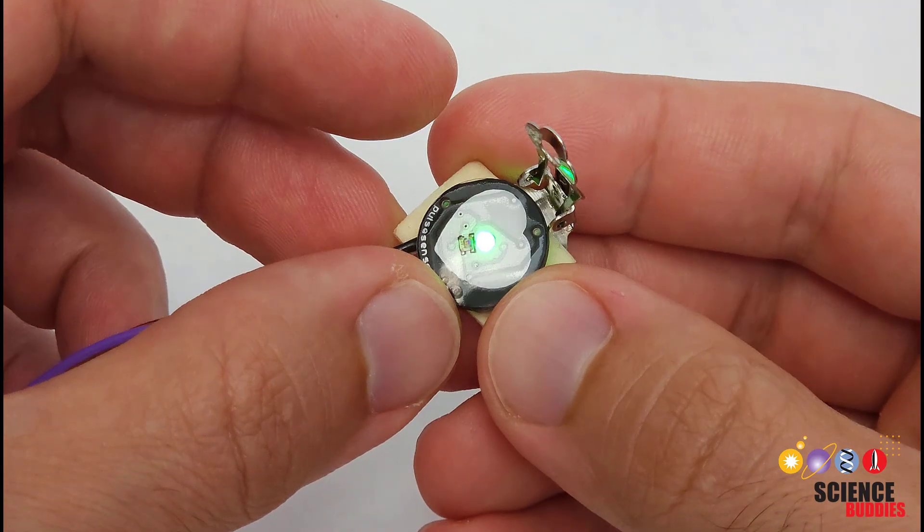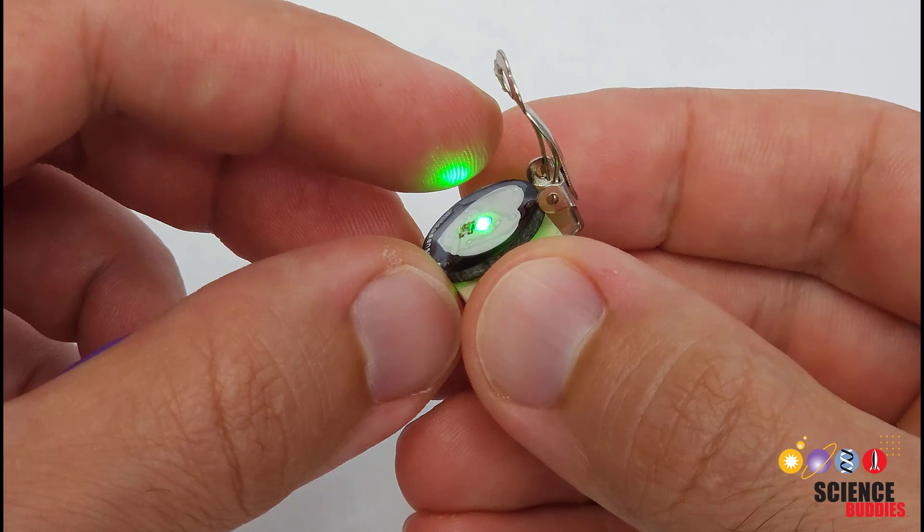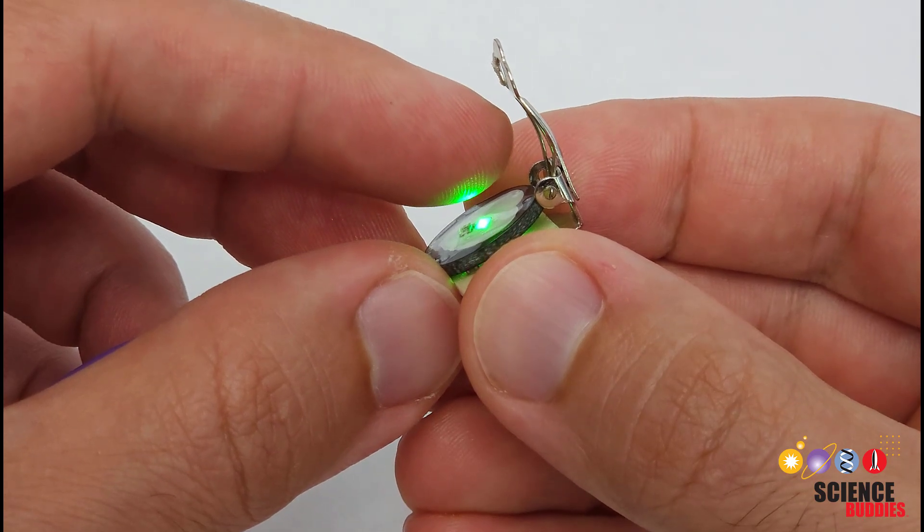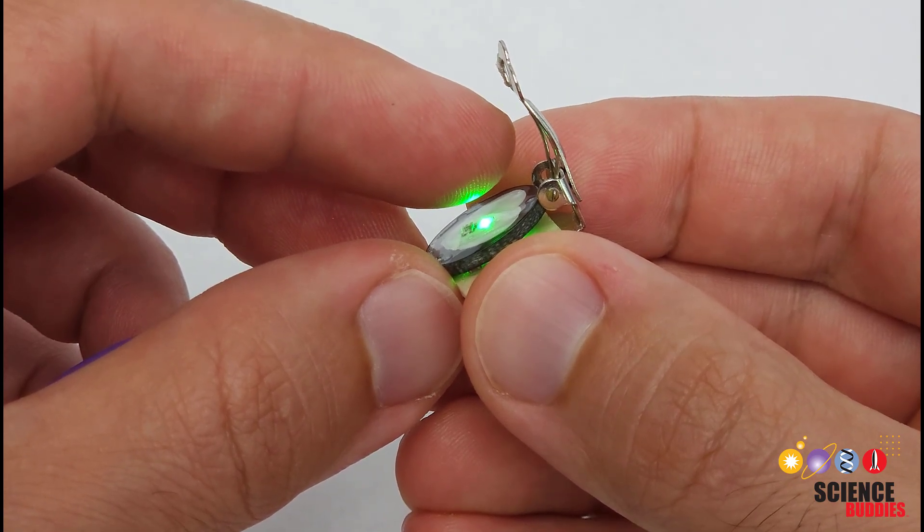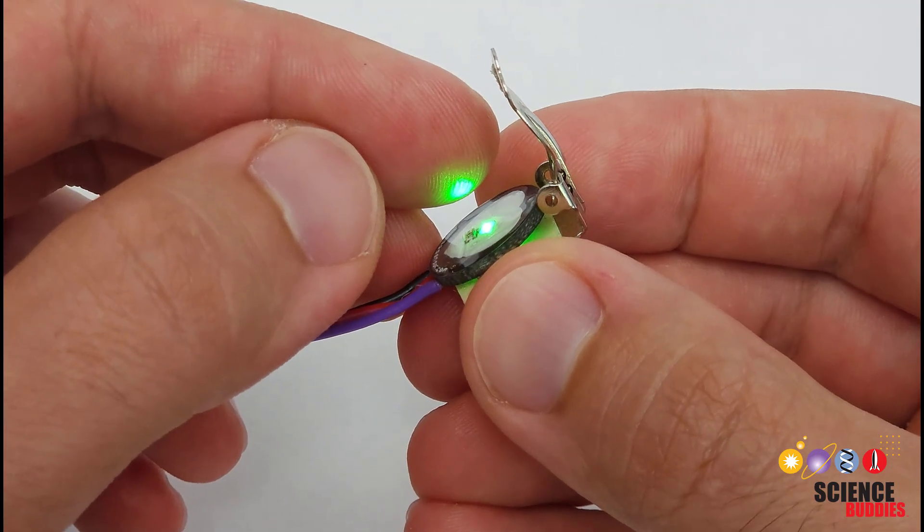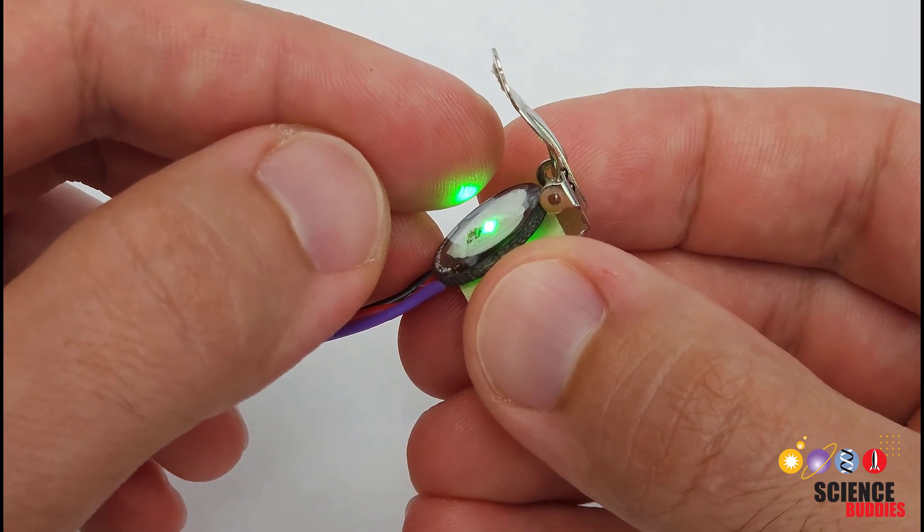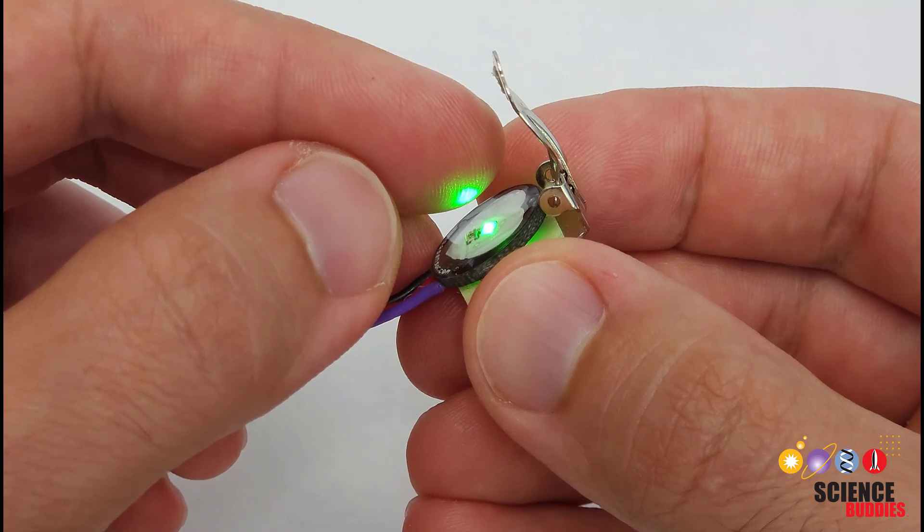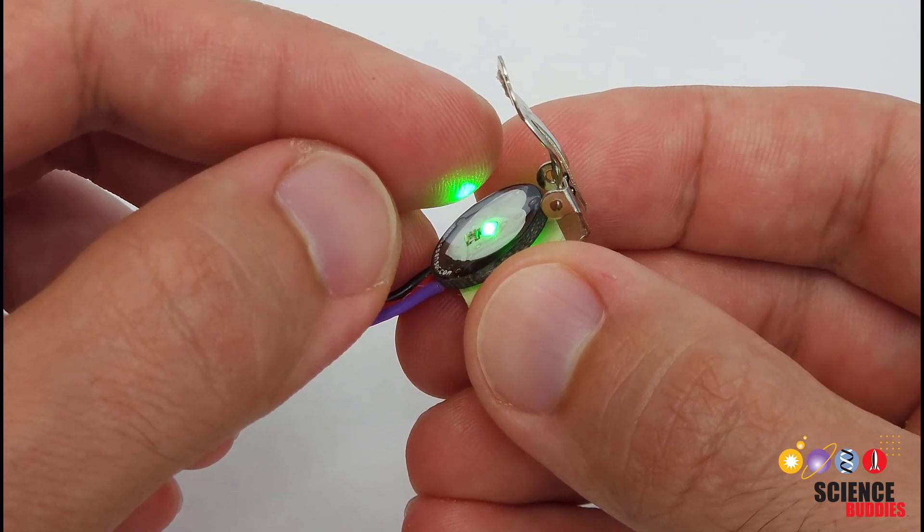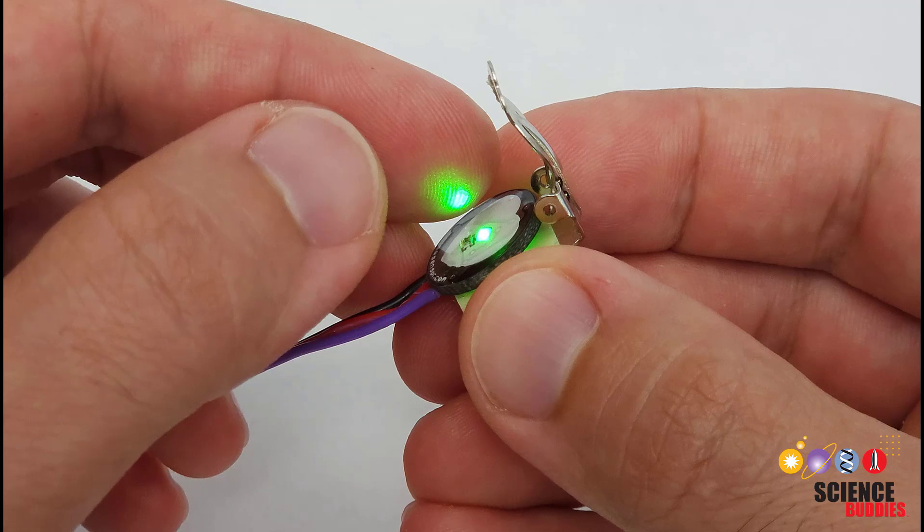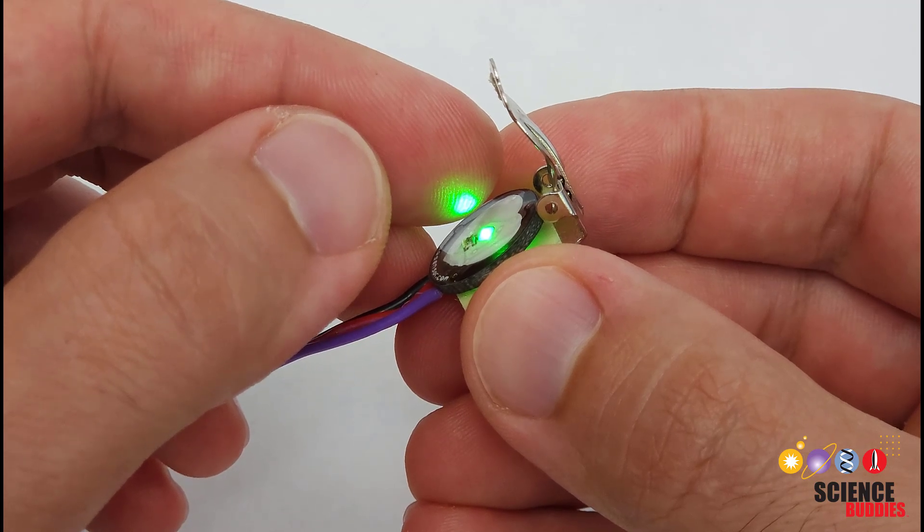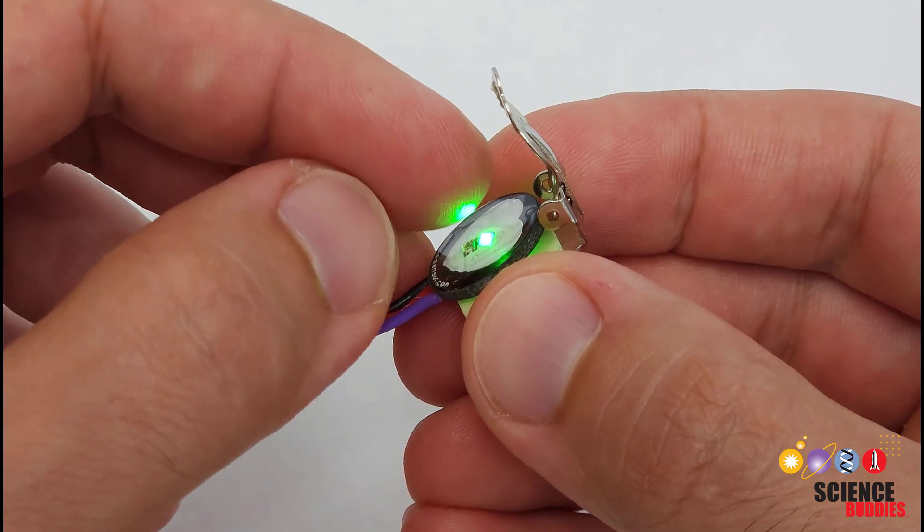Let's zoom in and take a look at the pulse sensor. This sensor works by emitting green light and measuring how much is reflected back. Since the red blood under your skin absorbs green light, the amount that's reflected back changes as your heart beats and your blood pulses. You can't see this change with your naked eye, but it can be picked up by the sensor.